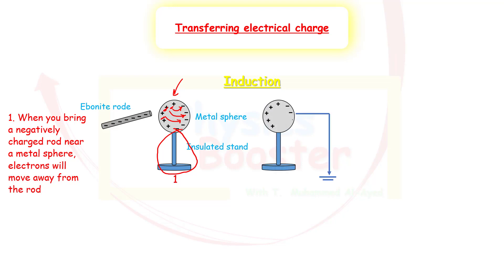The second step is called grounding, or earthing. Grounding means we break the insulation of the sphere by connecting it to the ground with a conductor. The ground has a source of infinite electrons — it can take as many electrons as needed, and also give them. So we allow the electrons to run even farther away from the negatively charged rod; they travel through the wire, which is a conductor, toward the ground.